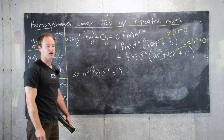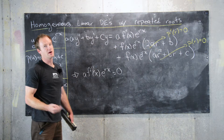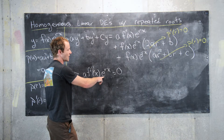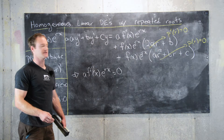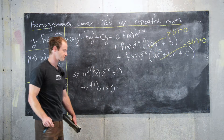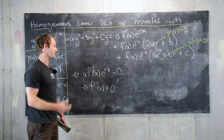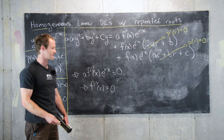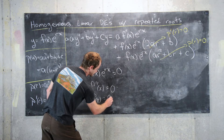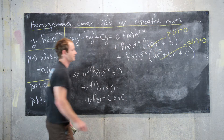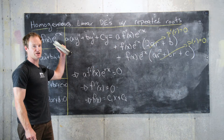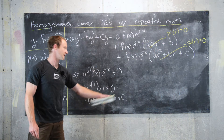This gives us a choice of a couple of things that could be 0. a could be 0, but in that case we wouldn't have a second order differential equation — so a is not 0. And e to the rx is never 0 because it's an exponential function. So, that tells us that f double prime of x equals 0. But if f double prime of x equals 0, that tells us that f prime is a constant, which tells us that the general form of f of x is c₁ times x plus c₂. So f of x is a linear function.